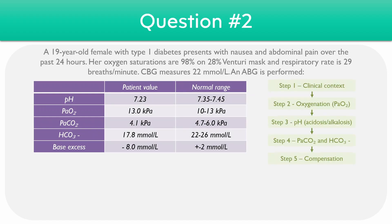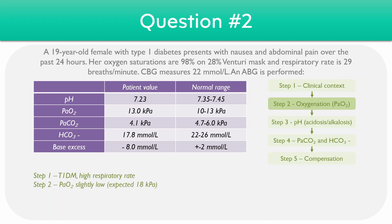Working through this example, the clinical context involves a type 1 diabetic with a high respiratory rate, so already we could come up with some main differentials. For step two, taking a look at the oxygen levels, the PaO2 is 13 kilopascals, which looks to be within the normal range. However, the patient is on a 28% Venturi mask, so we would actually expect the oxygen to be around 28 minus 10, or 18 kilopascals. As a result, the PaO2 is slightly low for the level of oxygen the patient is on.